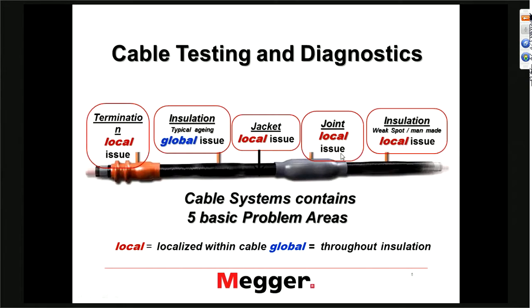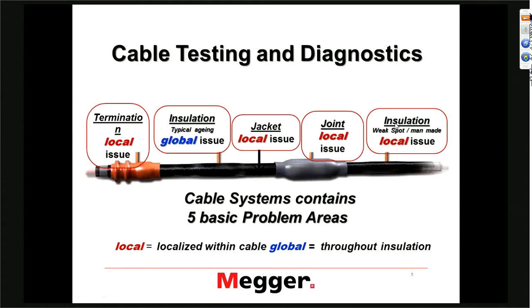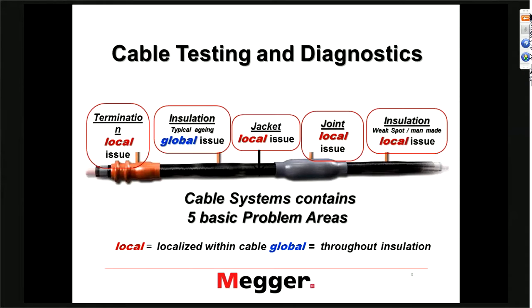We have the joints or splices, which are also of local nature. Most of the time when we deal with splice issues, they are related to workmanship. On the right side, you see insulation again. The insulation could also have some local issues, but they are typically induced — opposite to the aging we talked about before. If we have local issues to the insulation, they are typically a result of the insulation process. To summarize: local issues are localized within the cable, and global issues are throughout the insulation.